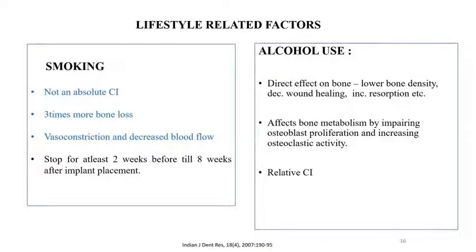Coming to lifestyle-related factors: smoking is not an absolute contraindication, but there will be three times more bone loss due to vasoconstriction and decreased blood flow. A patient needs to stop smoking at least two weeks before and should maintain cessation until eight weeks after implant placement. Alcohol use has a direct effect on bone — it can increase resorption and impair the remodeling process.